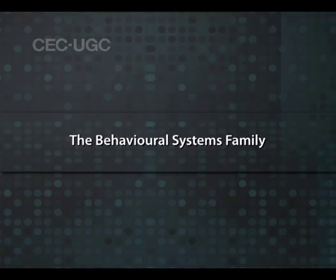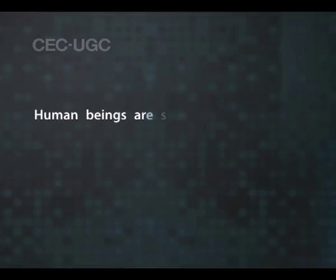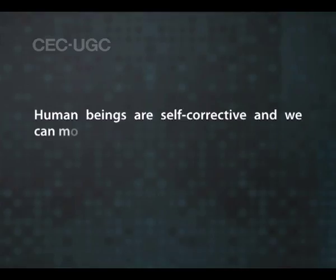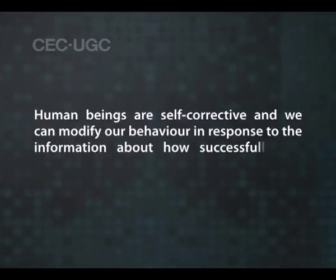The behavioral systems family: models in this family are designed on the basis of social learning theory or behavior modification theory. The basis is that human beings are self-corrective and can modify behavior in response to information about how successfully tasks are accomplished. Mastery learning, direct instruction, simulation, social learning, and programmed instruction are the major models in this family.